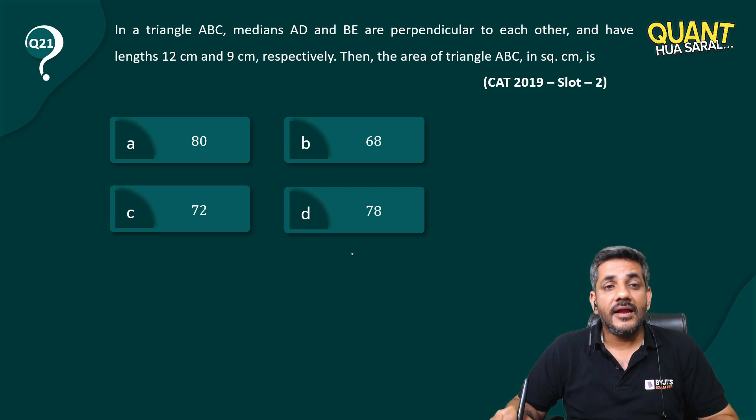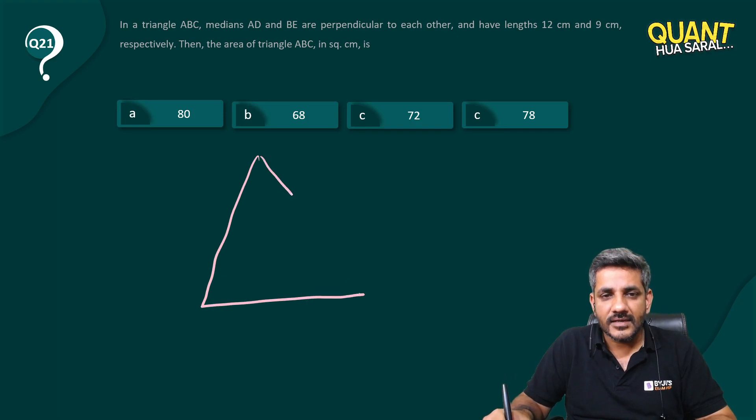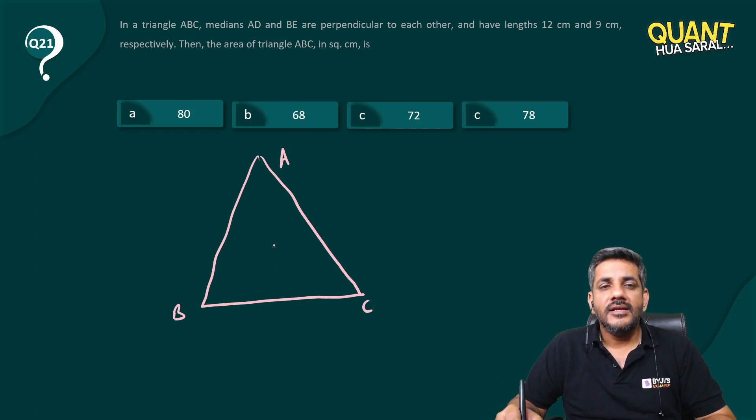They have length 12 and 9 respectively. Then the area of triangle ABC in square centimeters. Let me make a triangle first. So here is the triangle given to us, triangle ABC.